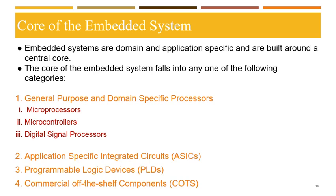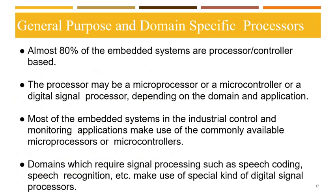If you examine any embedded system, you will find it is built around one of these core units. Almost 80% of embedded systems are processor or controller based. The processor may be a microprocessor, microcontroller, or digital signal processor depending on the domain and application. Most embedded systems in industrial control and monitoring applications use commonly available microprocessors or microcontrollers, whereas domains requiring signal processing such as speech coding and speech recognition may use special digital signal processors from manufacturers like Analog Devices and Texas Instruments.